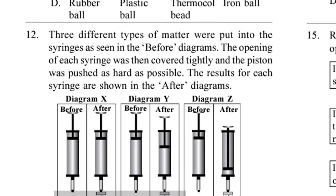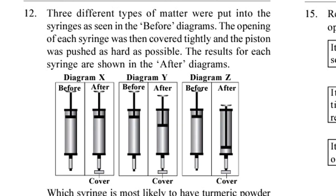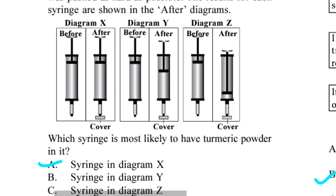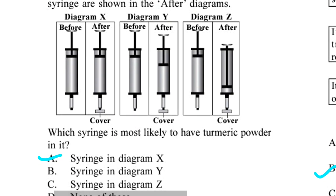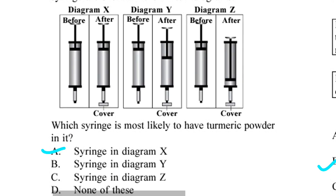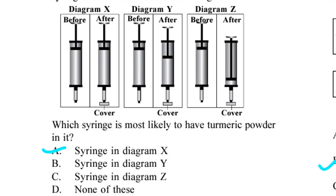Question 12. Three different types of matter were put into the syringes as seen in the before diagrams. The opening of each syringe was then covered tightly and the piston was pushed as hard as possible. The results for each syringe are shown in the after diagrams. Which syringe is most likely to have turmeric powder? Answer is option A, syringe in diagram X.